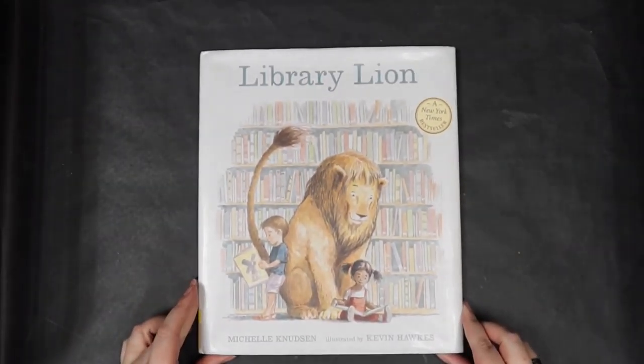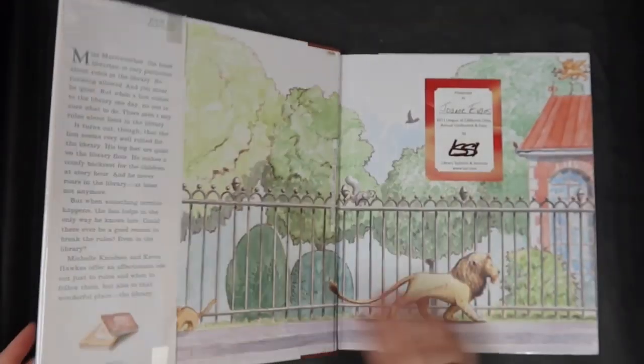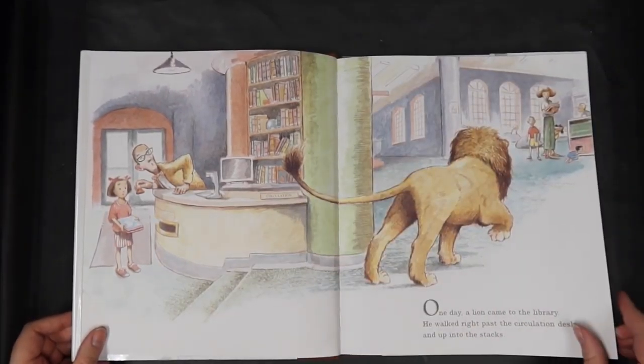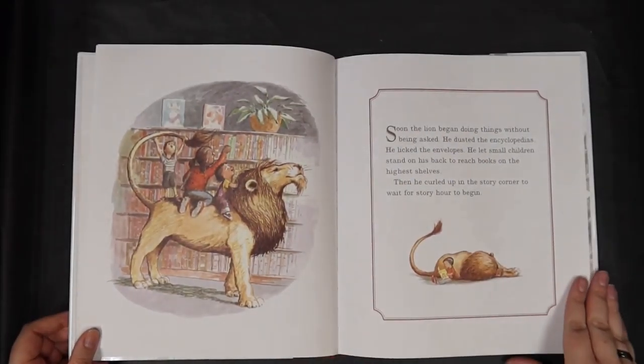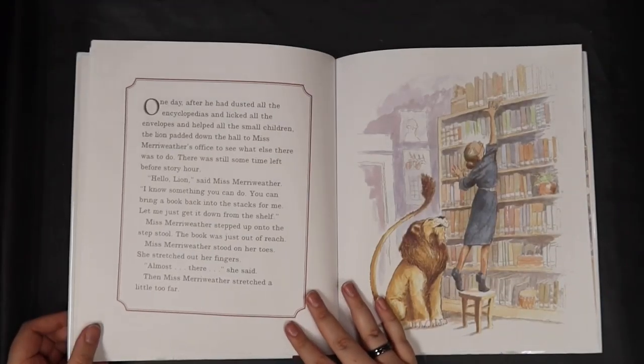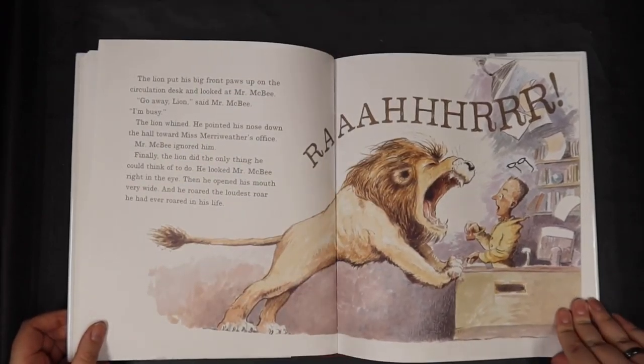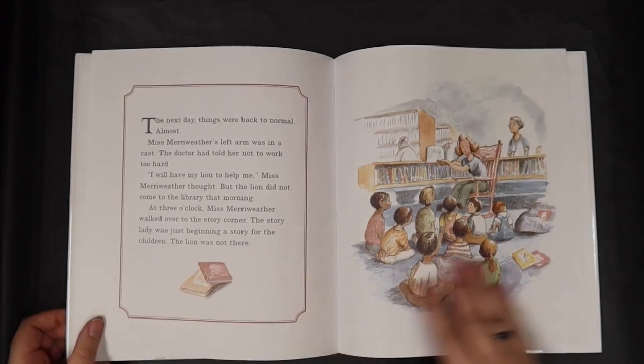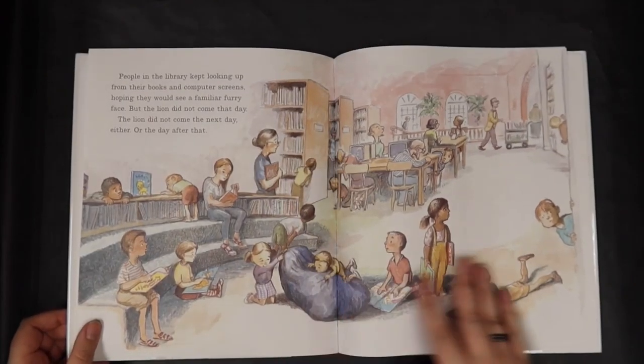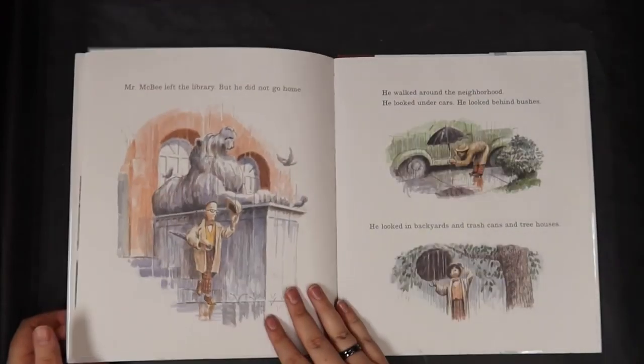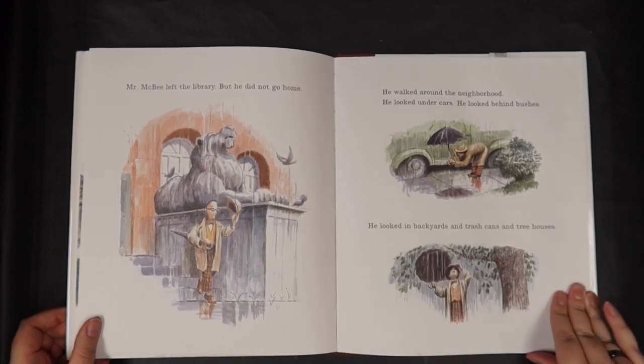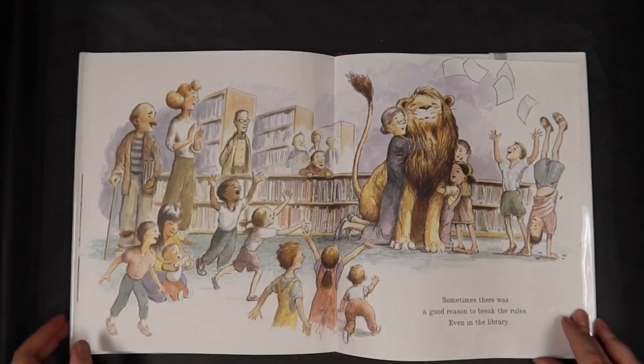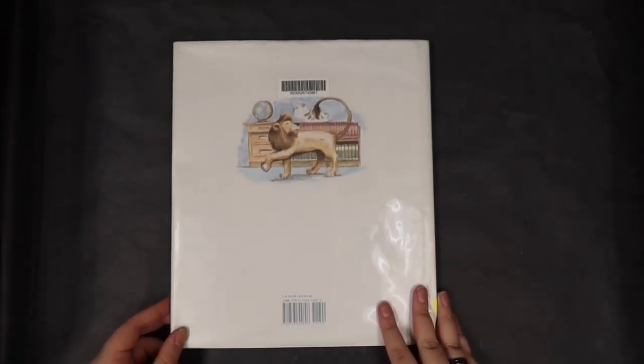Our last book is Library Lion by Michelle Knudsen. This is the story of a lion who wanders into the library. He makes a fuss and he makes a ruckus until eventually he learns the important rule of being quiet. Until one time, he can't be quiet anymore. Will Lion get in trouble for having to roar to help a friend? Will he be let back within the library for breaking the rules? Read this book and find out.